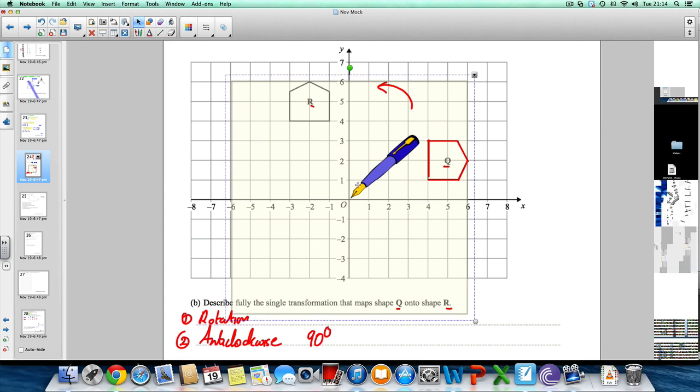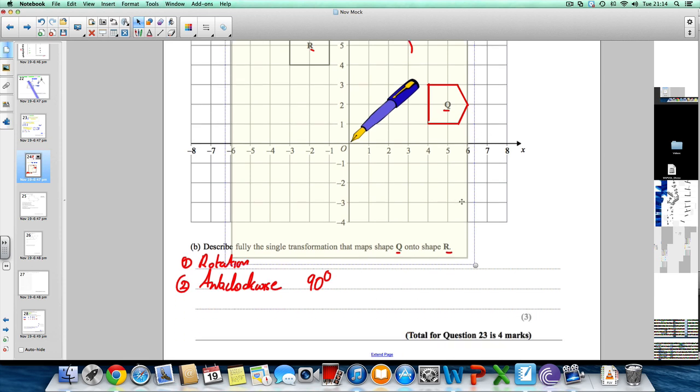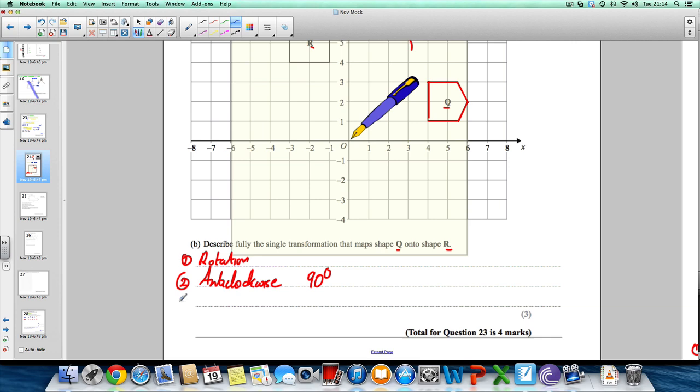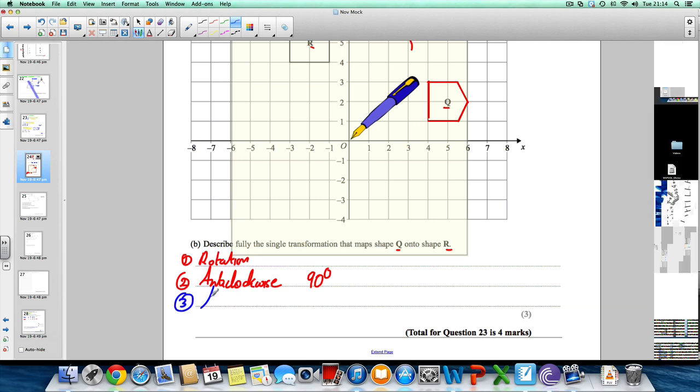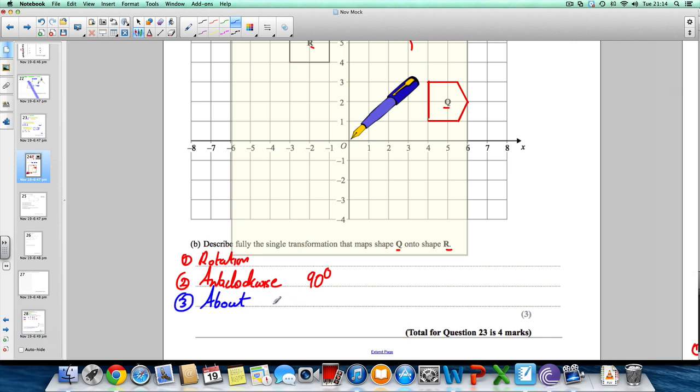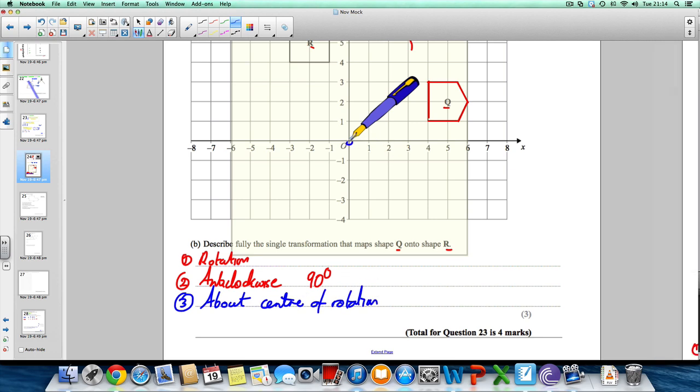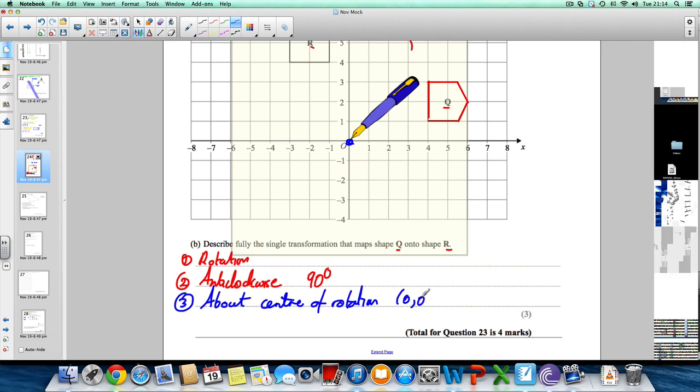If it didn't, you try and hold your pen down somewhere else and do the twist. But in this case, (0, 0) worked. So for your third and final mark, you state center of rotation where you held your pen down: (0, 0).